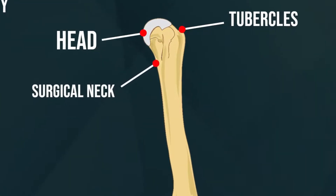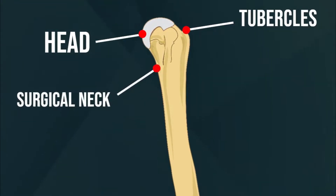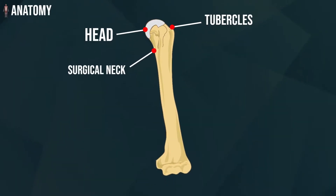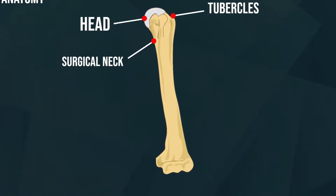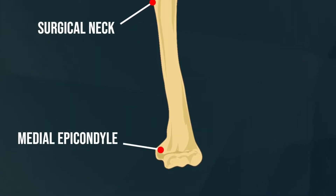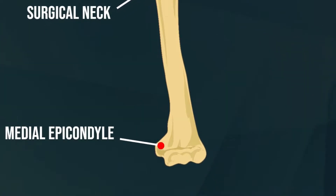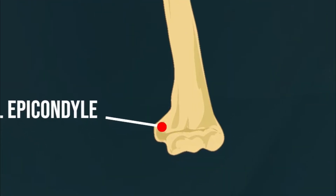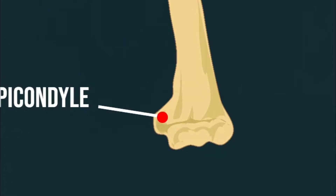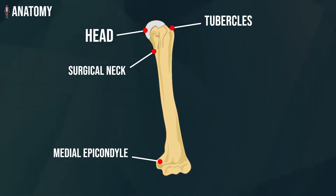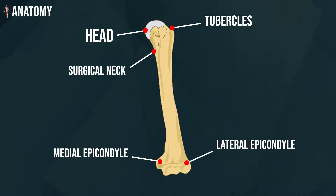Surgical neck: This part is located at the base of the humerus and is a common site for fractures. Epicondyles: They are bony protrusions at the lower end of the bone and serve as attachment points for the muscles of the lower arm, wrist, and hand. The body has two: the medial and lateral epicondyles.